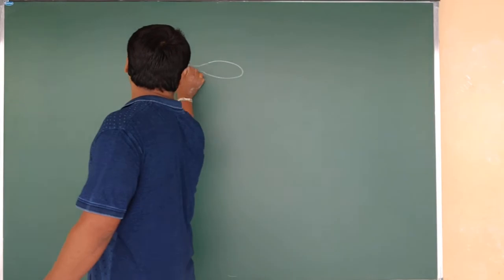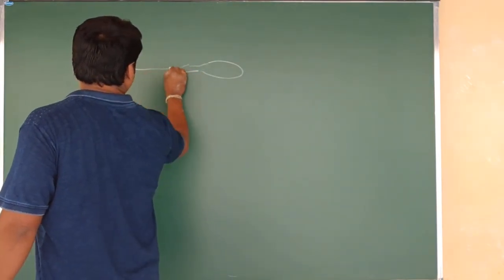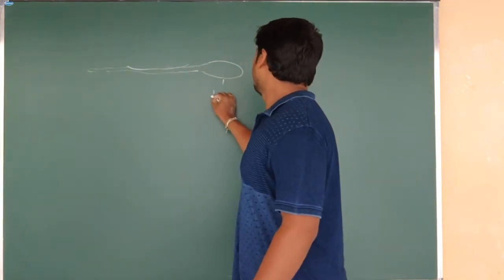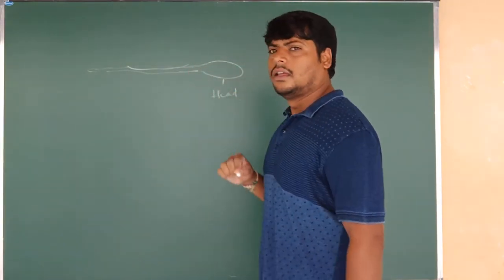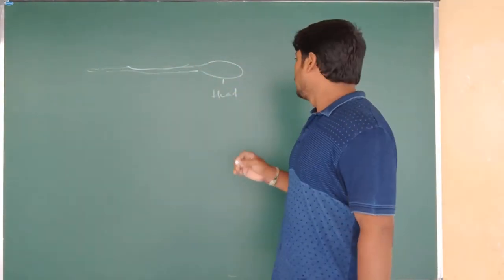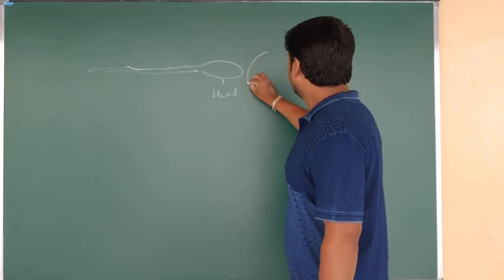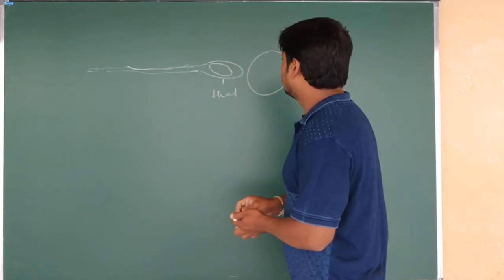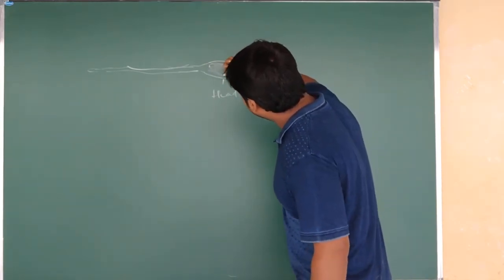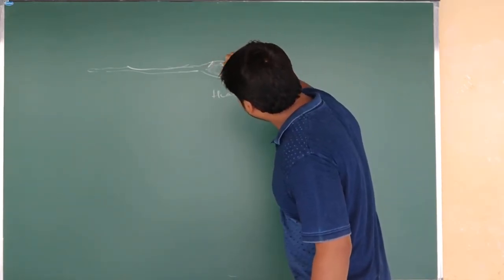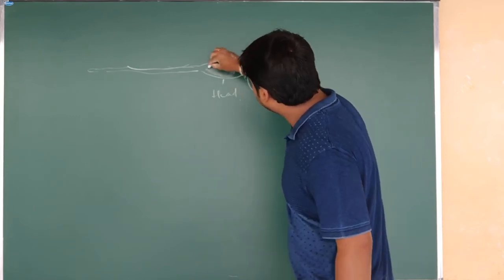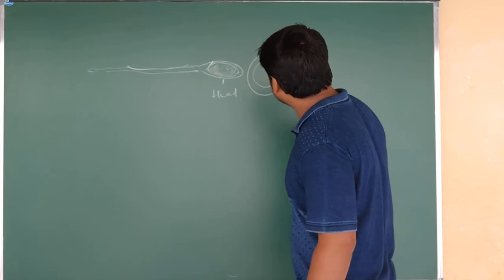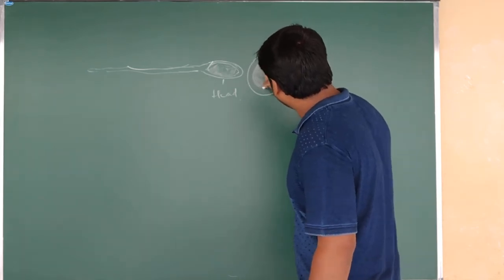We have seen the structure of the male gamete, that is the sperm cell — this is the head part. This is the female egg cell. Both consist of a nucleus. In the sperm cell, the nucleus is present in the head part, and here the nucleus is present in the egg cell.